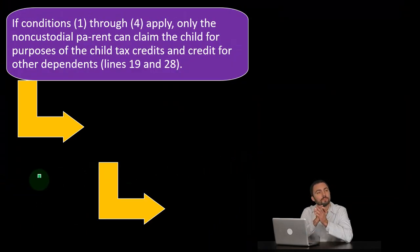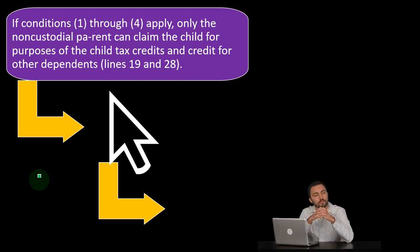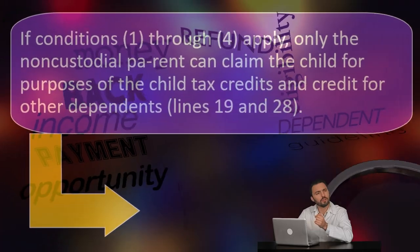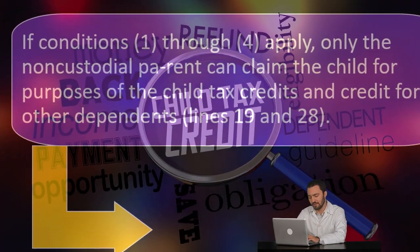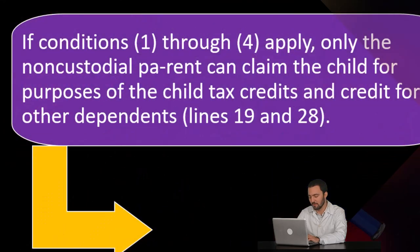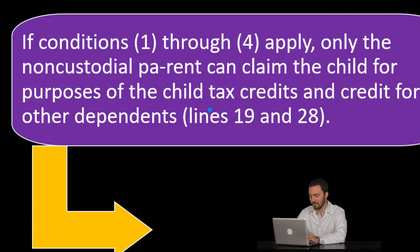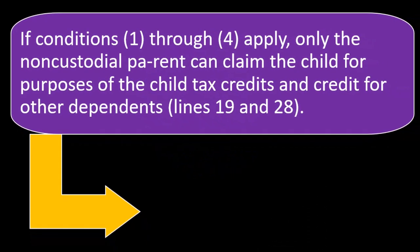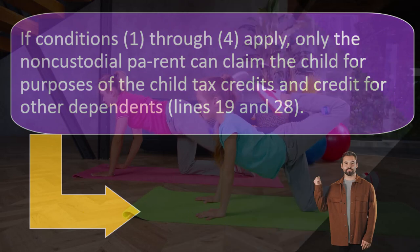If conditions one through four apply, only the non-custodial parent can claim the child for purposes of the child tax credit and credit for other dependents, lines 19 and 28. The general rule is that you can't claim a dependent on two returns. If the same Social Security number appears on two returns, you will almost surely get a kickback from the IRS.